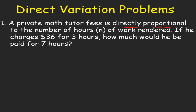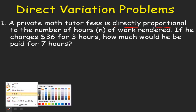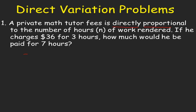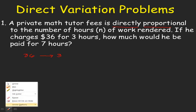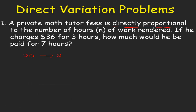On the second sentence, if he charges $36 for 3 hours, we can write $36 is to 3. We can then make a direct variation equation. Our equation will be $36 is equal to the constant of proportionality k, multiplied by 3. And then to find for k,